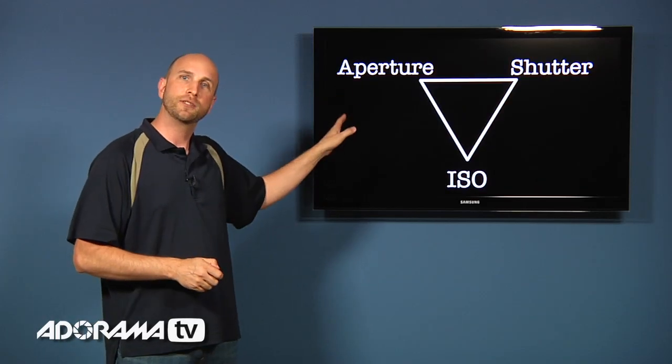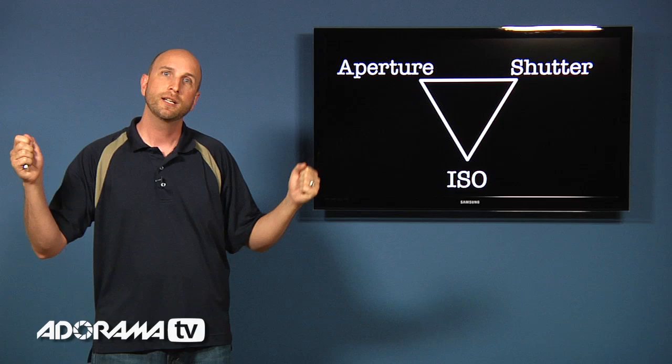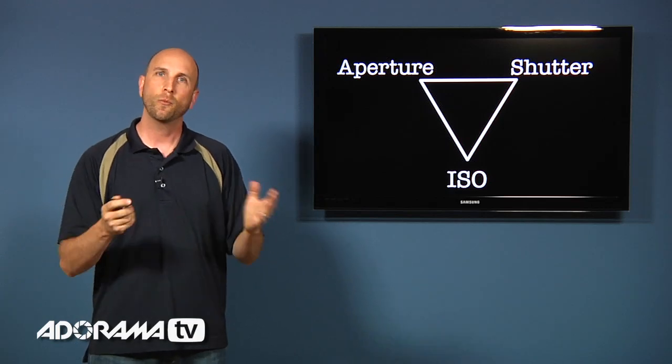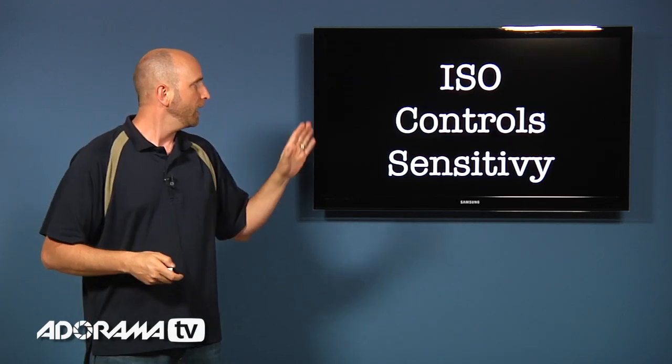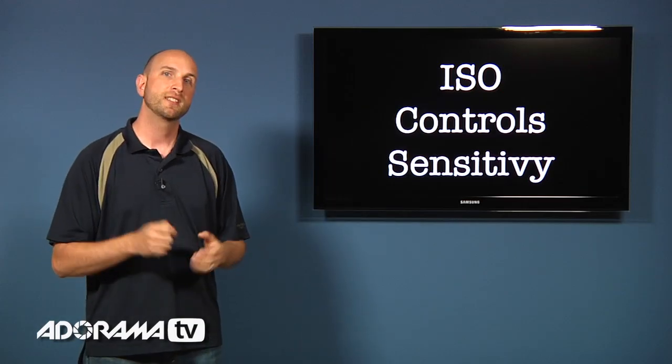So, so far we've talked about aperture and shutter. And how those two things work together to keep things in balance. Now what about ISO? How does that work? Well ISO controls our camera's sensitivity.